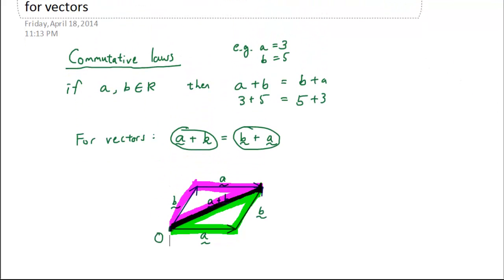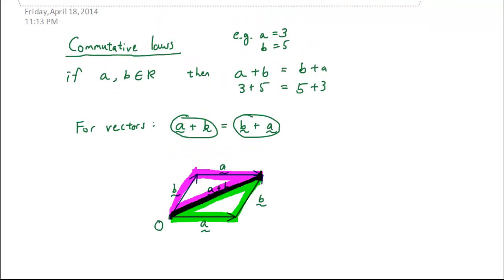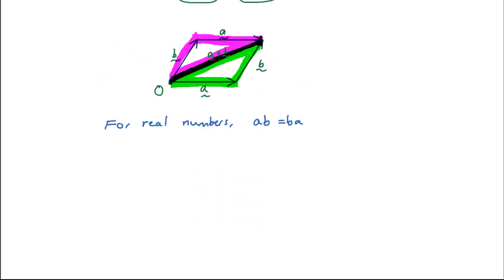Now let's look at the commutative law for multiplication. If a and b are real numbers, then ab equals ba. For example, 5 times 3 is the same as 3 times 5. So that's the commutative law for multiplication.